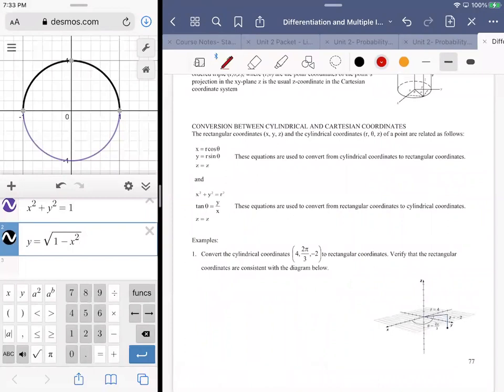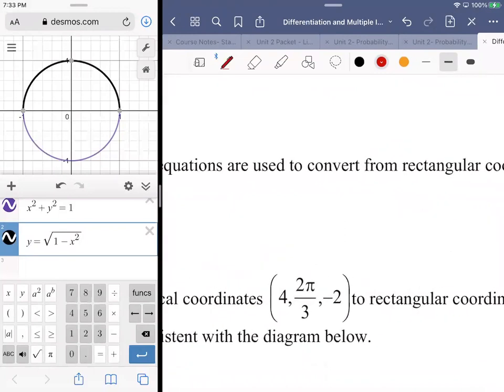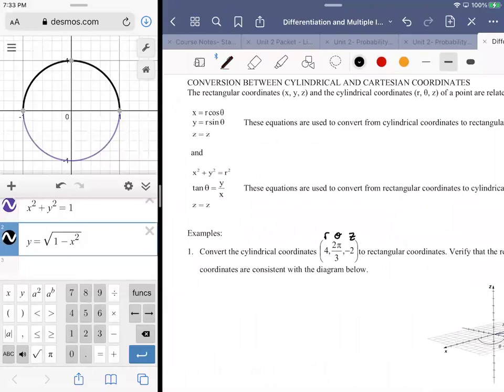The quick example at the bottom of page 77: convert the cylindrical coordinates into rectangular coordinates. Very straightforward because we have an r value, a theta value, and a z value. r, theta, z - that's what cylindrical coordinates are. Instead of x, y, z it's r, theta, z. So I need an x and I need a y, but I already have the z, so that's not too bad at all.